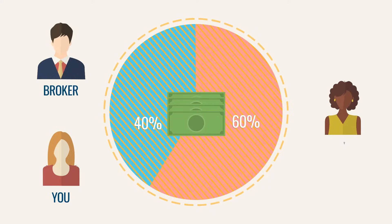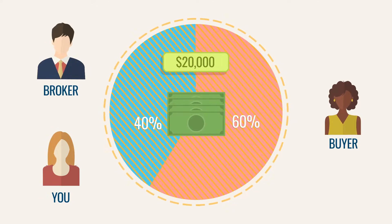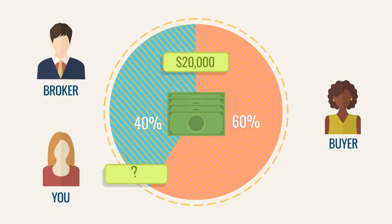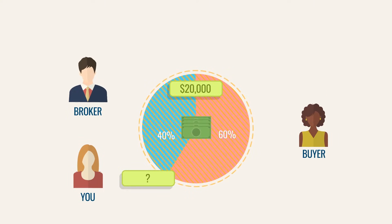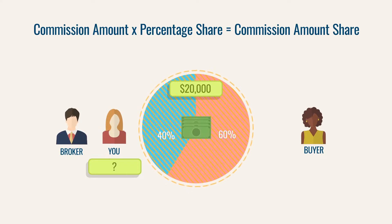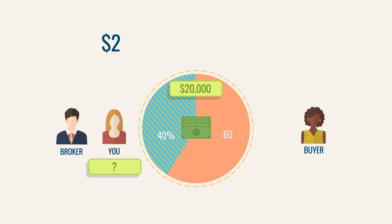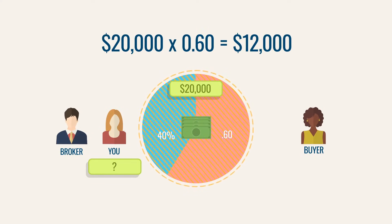You represent a buyer who follows through with the purchase of a home. Your firm receives a $20,000 commission — nice job. Your agreement with the broker is to receive 60% of the commission as compensation. How much will you take home? To find your split, use: commission amount times percentage share equals commission amount share. You are receiving 60%, which in decimal form is 0.6. $20,000 times 0.6 equals $12,000.